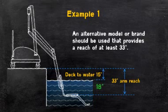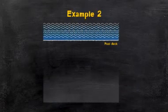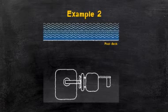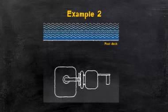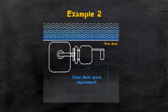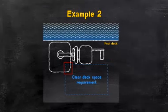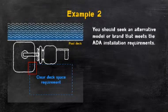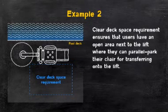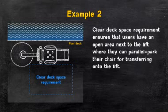This is one example of how site variability can affect compliance. Here's another: your customer has a pool with less than 300 linear feet of pool wall and requires one means of access. So you choose your favorite brand of lift, identify an area of the pool where the water depth does not exceed 48 inches, and carefully place your lift 16 inches back from the pool's edge to meet the seat centerline requirement. At this point, everything looks good. Next, you check the clear deck space area and discover that a portion of the lift encroaches into this space. What's your next step? If you chose to stop, you're correct. In this particular instance, you should seek an alternative model or brand that meets the ADA installation requirements. The clear deck space requirement is designed to provide an area of unobstructed space starting at the back corner of the seat opposite the pool.